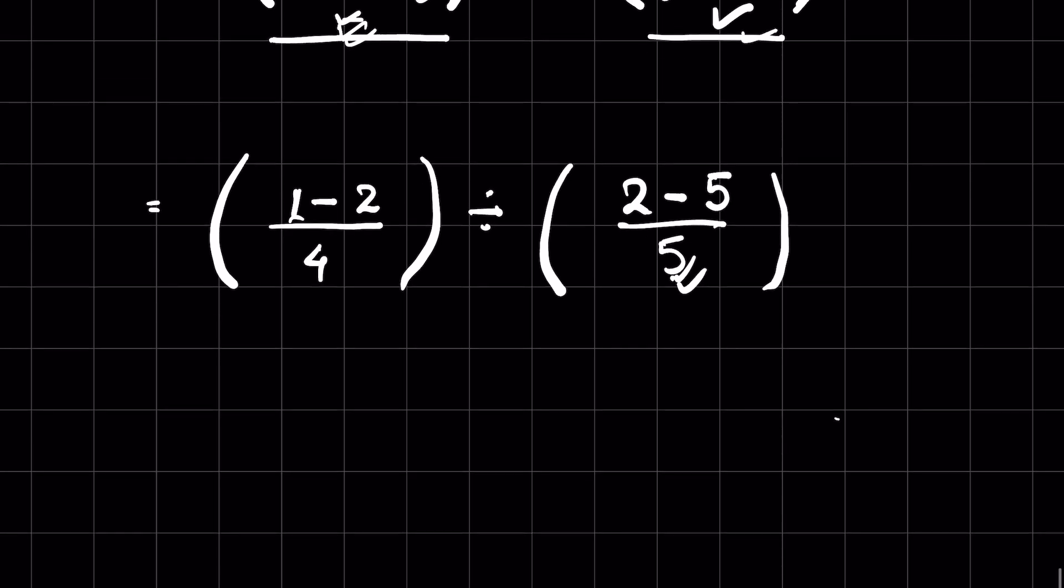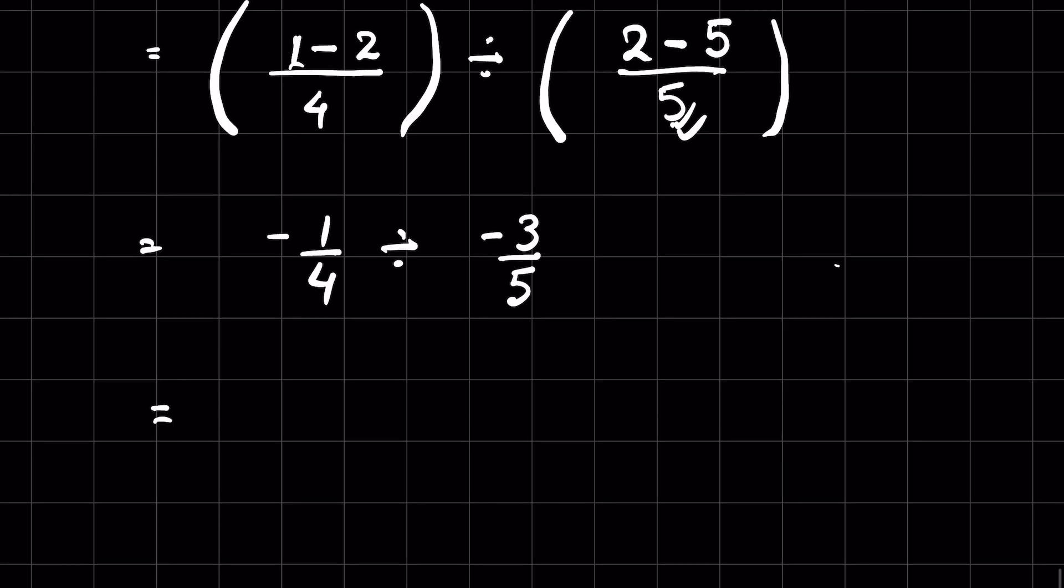1 minus 2 will be negative 1 upon 4. We did the operation, so we removed the bracket. Then division, here also 2 minus 5 will be negative 3 upon 5.